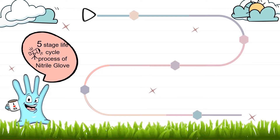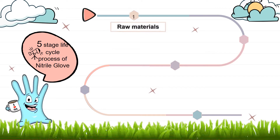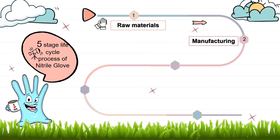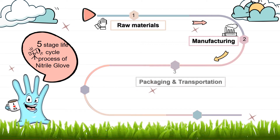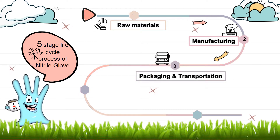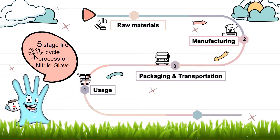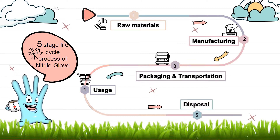Next, we go to the 5-stage life cycle process of nitrile glove. Firstly, raw material. Next, manufacturing. Packaging and transportation. Usage. And last but not least, disposal.